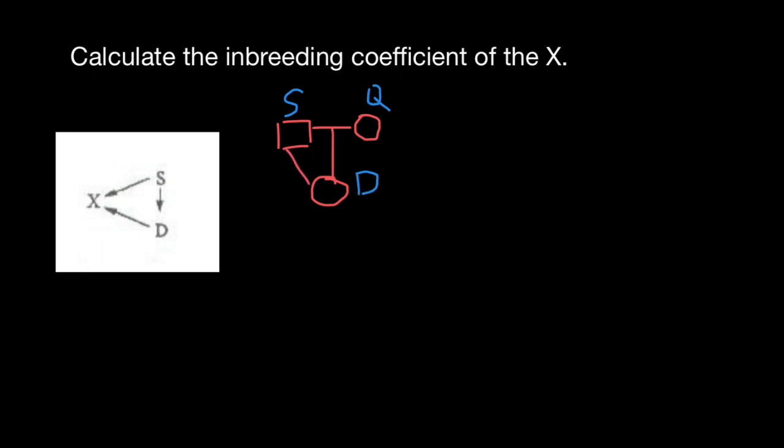We have here a consanguineous mating. Father mates with its daughter and they have a progeny X. Sex is not important, so I would use this sign and it's individual X.